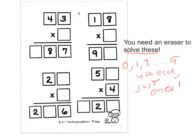Looking at these, when I multiply 18 to get into the 90s, the only thing that can be is times 5. Times 6 would be 60 plus 48, which is 108. Times 4 would be 40 plus 32, which is 72. So this has to be a 5, and this has to be a 0.